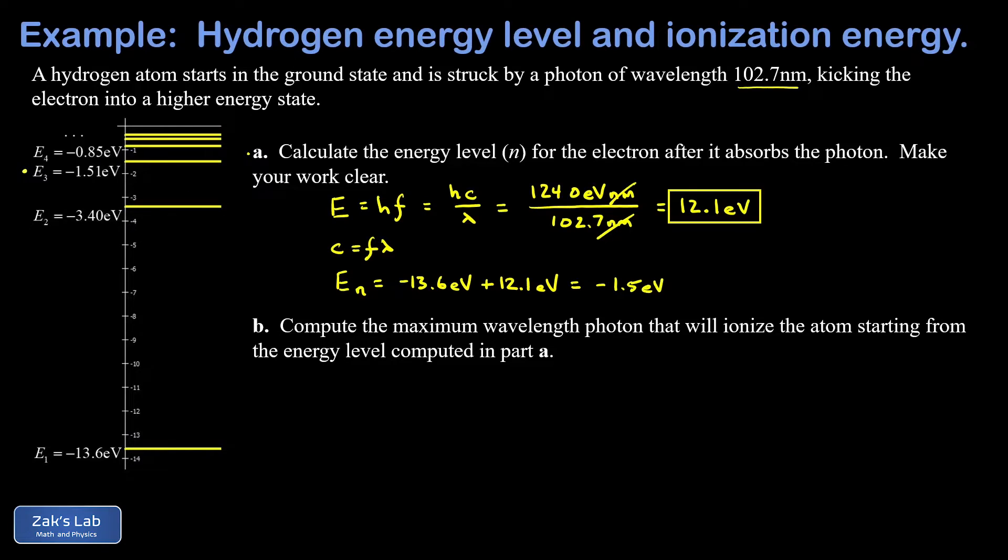This gives me an energy of -1.5 eV. Now our rounding was a bit crude in this problem, but I can tell I'm looking at E₃, the second excited state for that electron. So to answer the question, n is equal to 3.